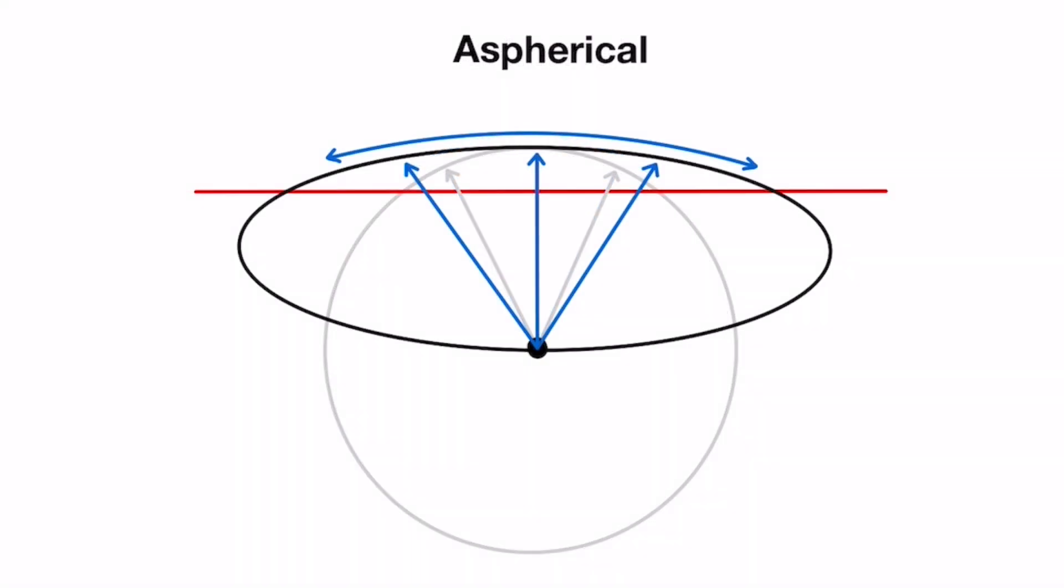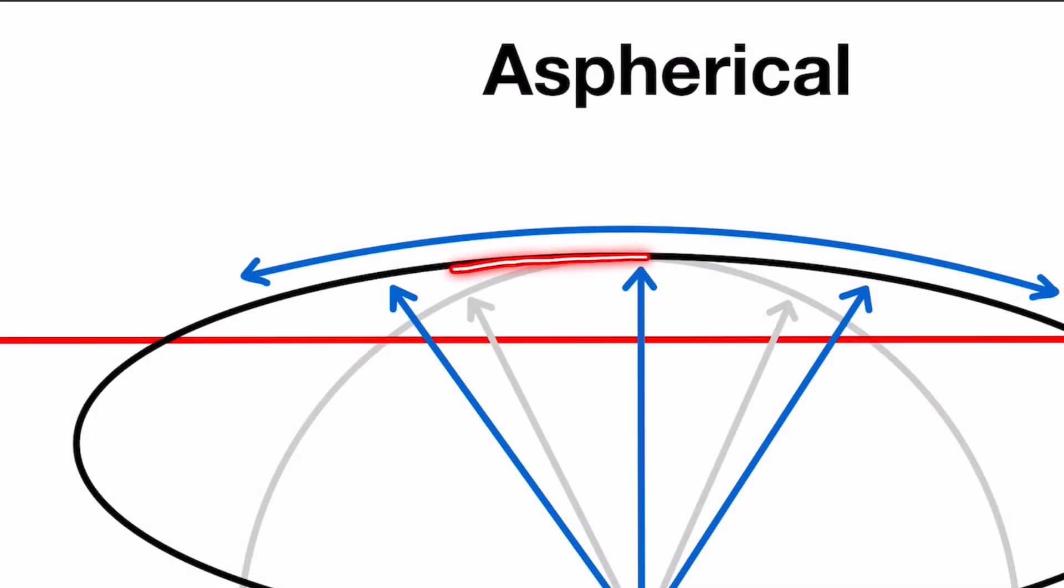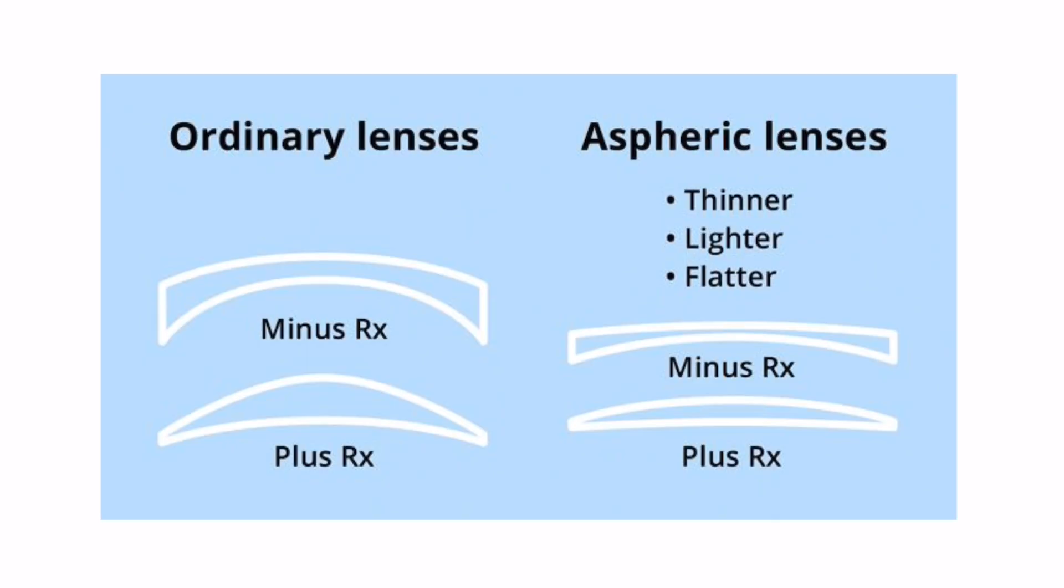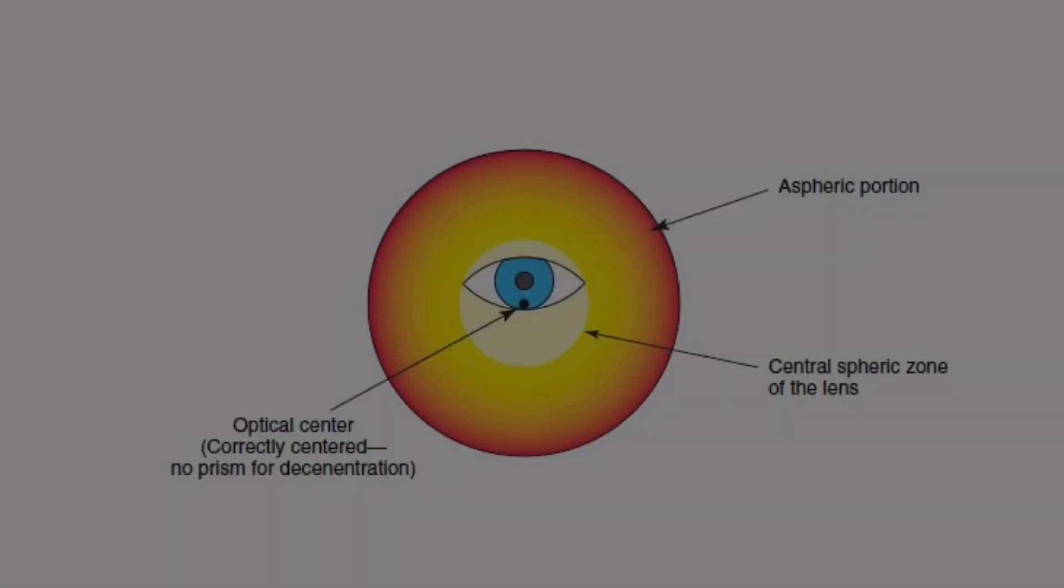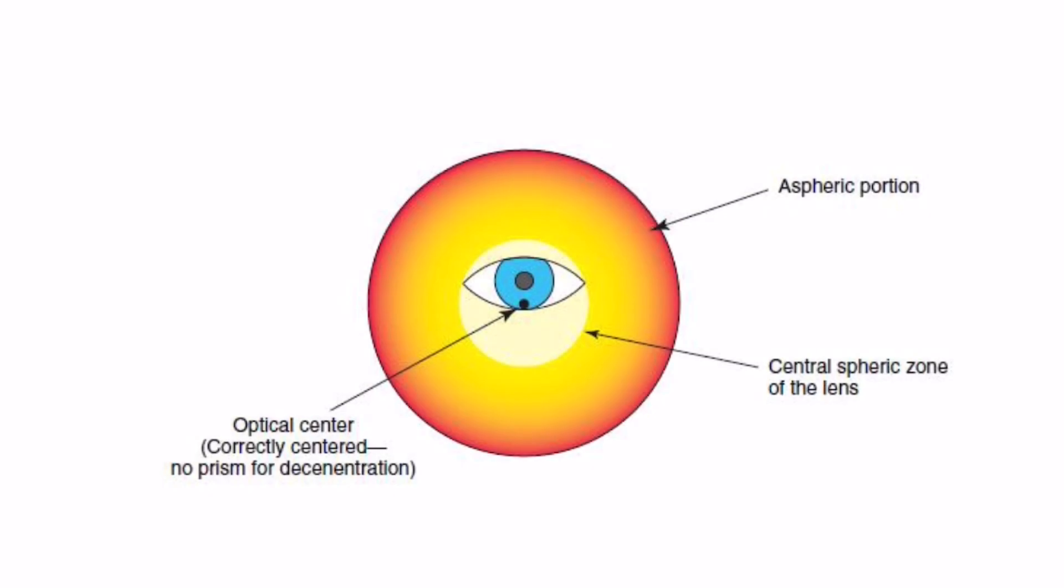Aspheric lenses on the other hand do not have the same curvature across the lens from edge to edge. On these lenses as you move away from the quarter sized spherical window at the center of the blank, the lens curvature begins to progressively flatten. This aspheric flattening produces a better lens profile and is designed to counteract peripheral aberrations or visual distortions in the lens.